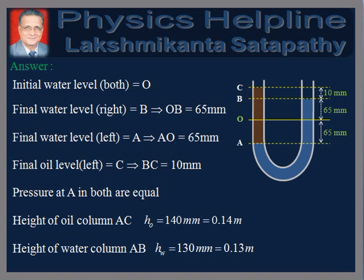Let us first understand the figure. Initially, the water level on both sides was at O. Finally, the water level on the right rises up to B, which implies OB is equal to 65 mm. Also, the final water level on the left drops to A, which implies AO is equal to 65 mm. It is given that the oil level on the left is 10 mm above the water level on the right, which implies BC is equal to 10 mm.